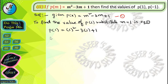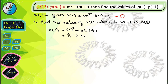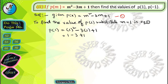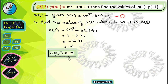To find the value of p(1), substitute m is equal to 1 in equation 1. After substituting, we get p(1) is equal to 1 square minus 3 into 1 plus 1. After simplification, 1 square is 1, 3 into 1 is 3, so we get 1 minus 3 plus 1, which gives minus 2 plus 1 equals minus 1. Therefore, p(1) is equal to minus 1.